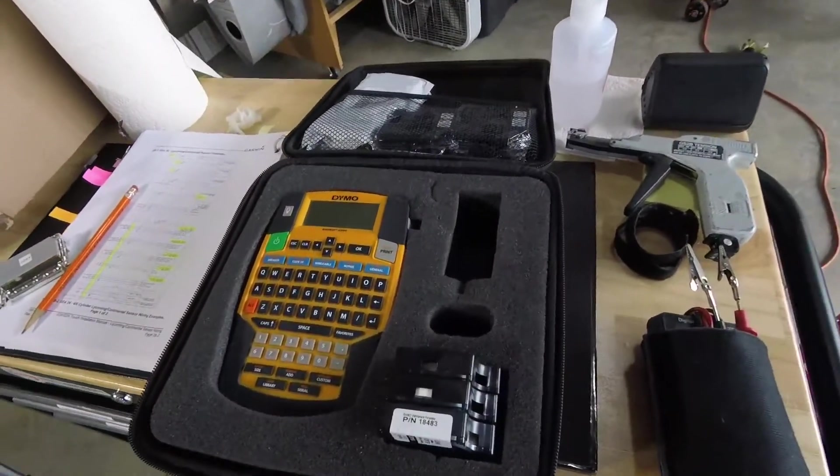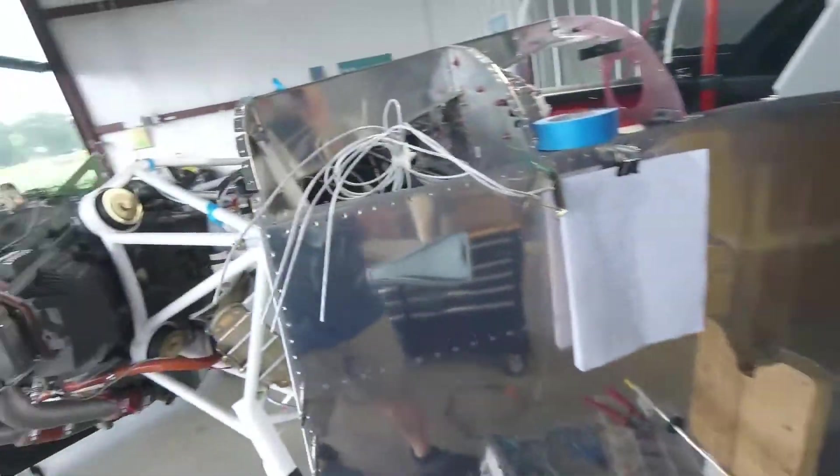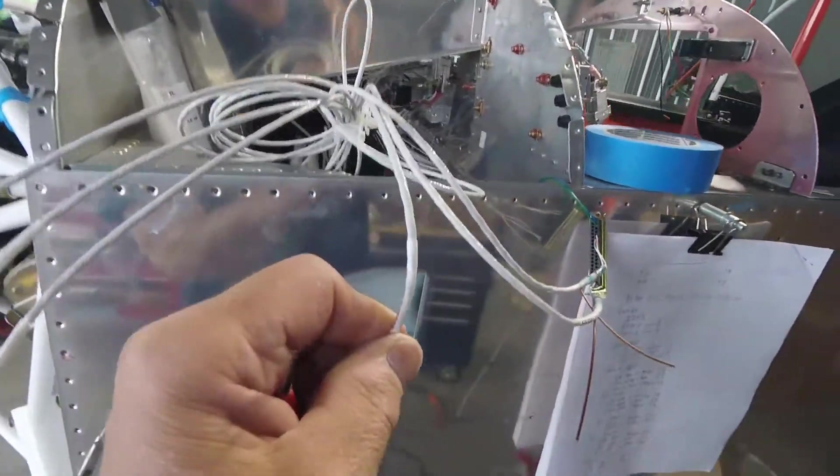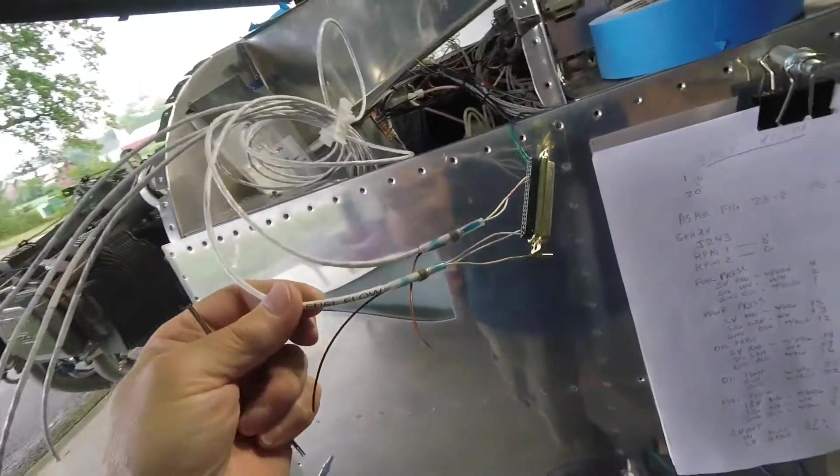I've got this wonderful Dymo 4200 with some heat shrink tubing. It does an excellent job. I highly recommend it for everybody who wants to label your wires.